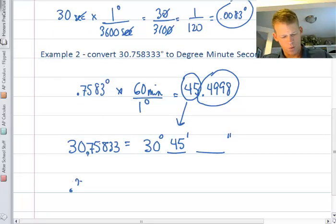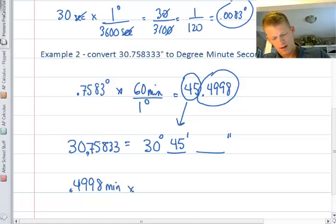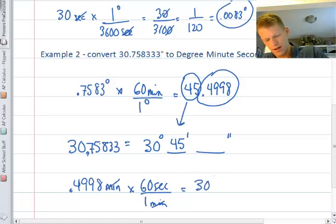I'm going to take .4998 minutes and multiply it by 60 seconds per 1 minute. When we multiply that, the minutes cancel and you're left with seconds. This equals 30 seconds.